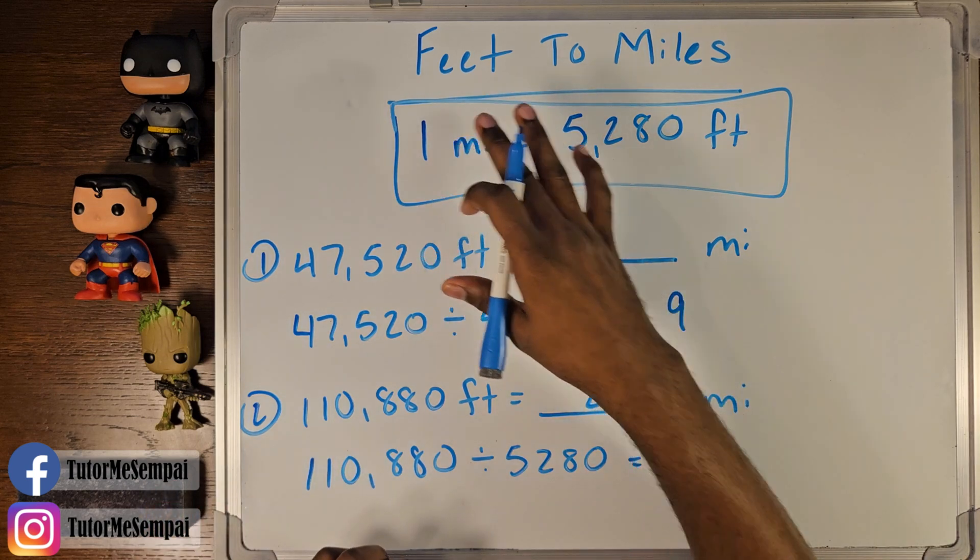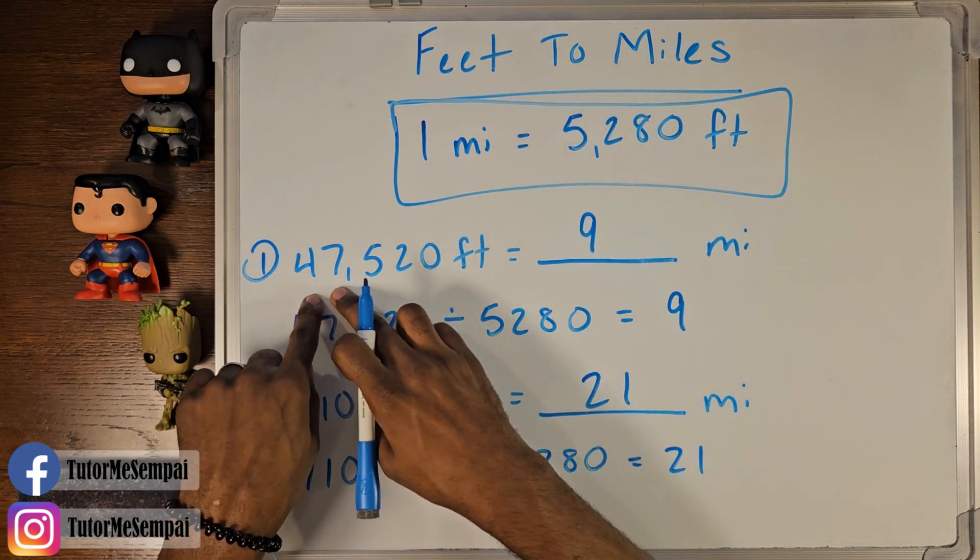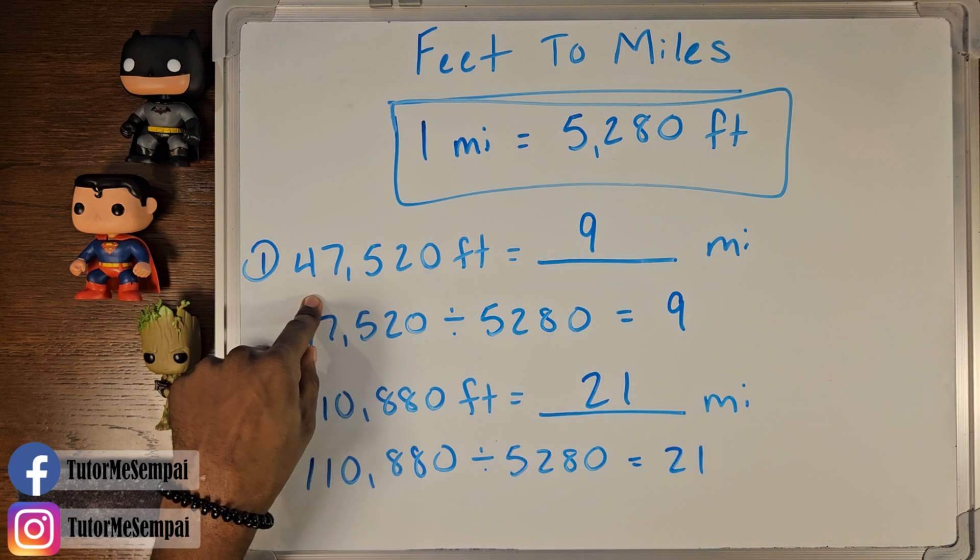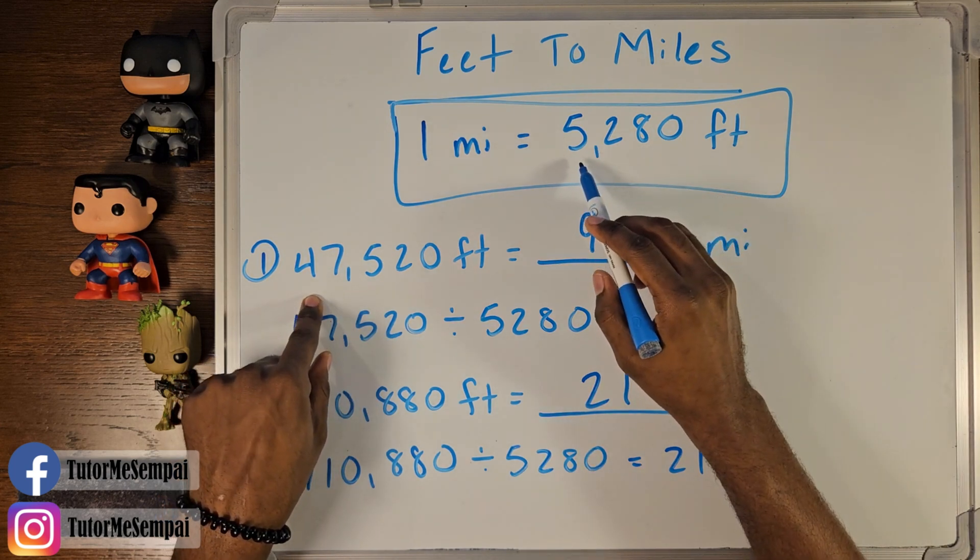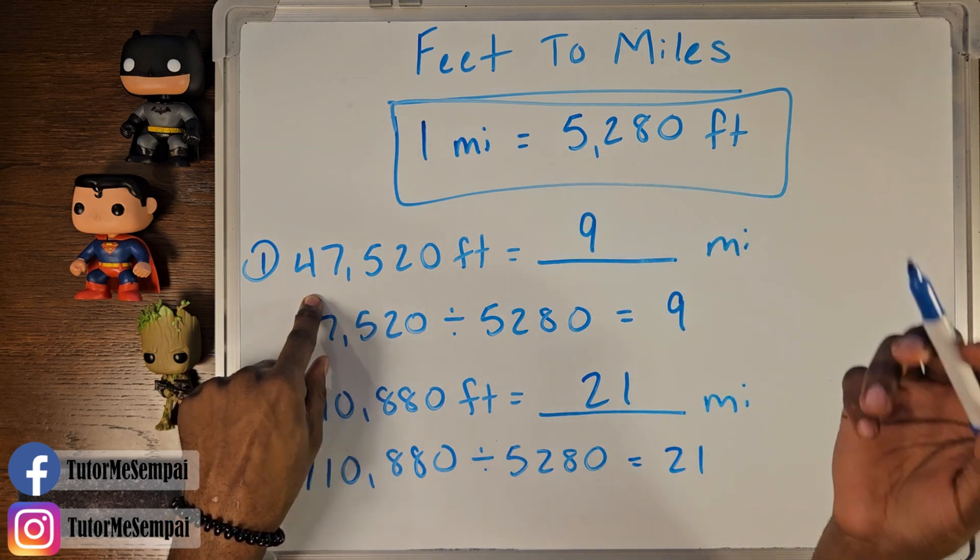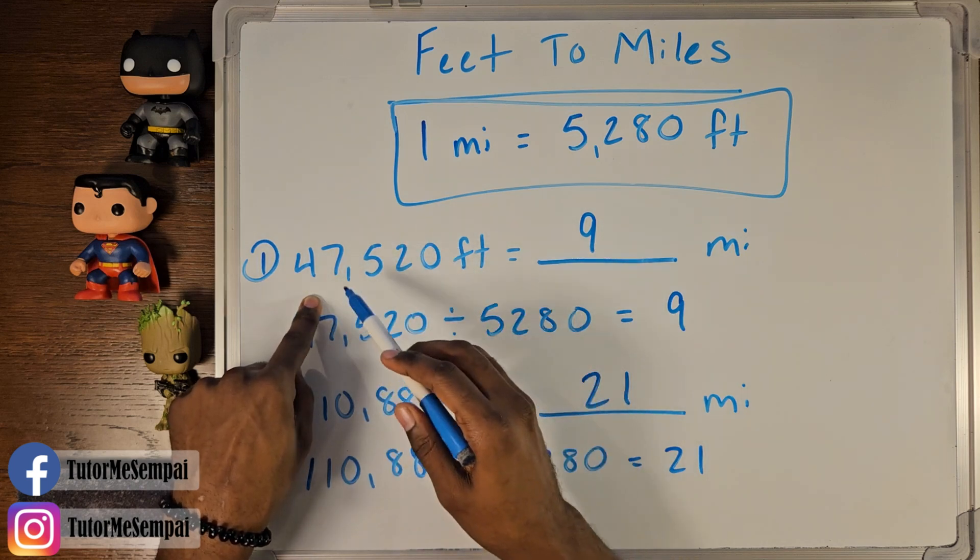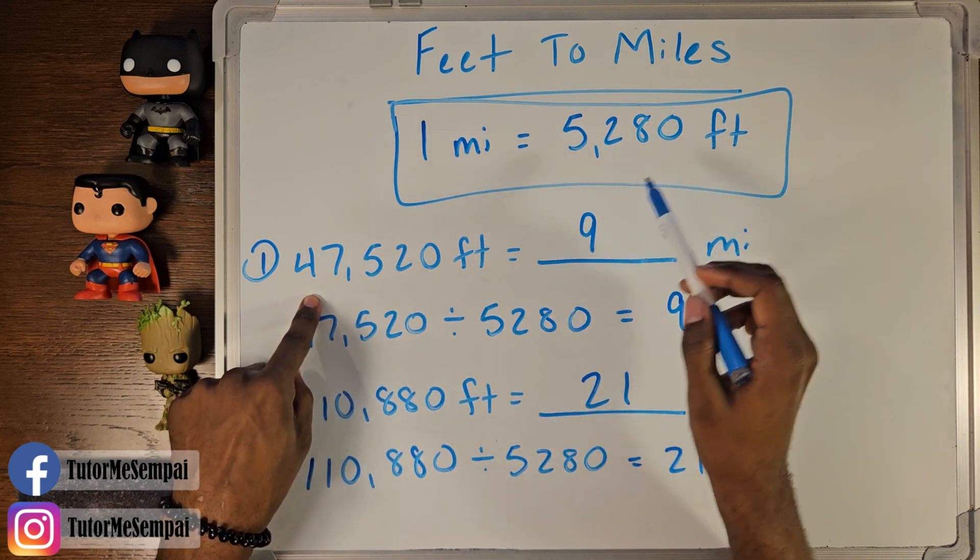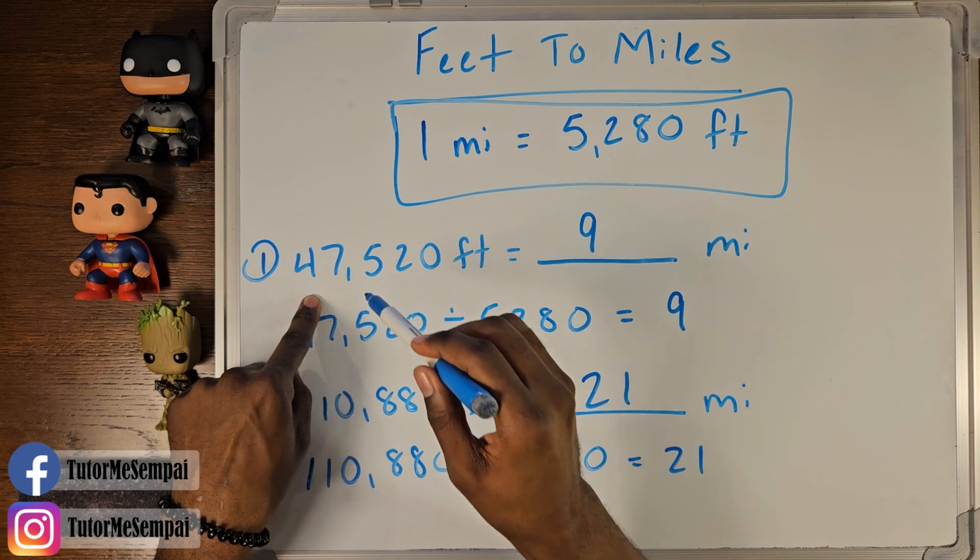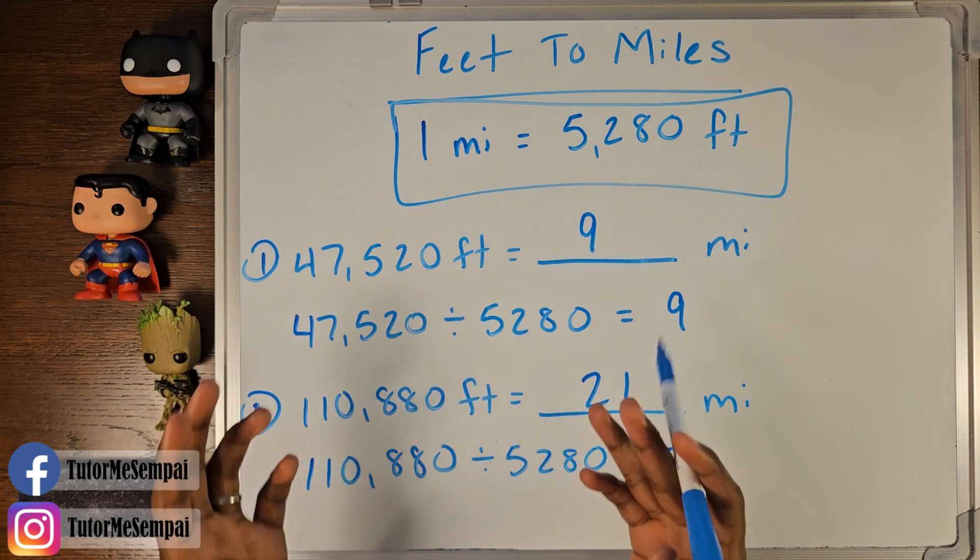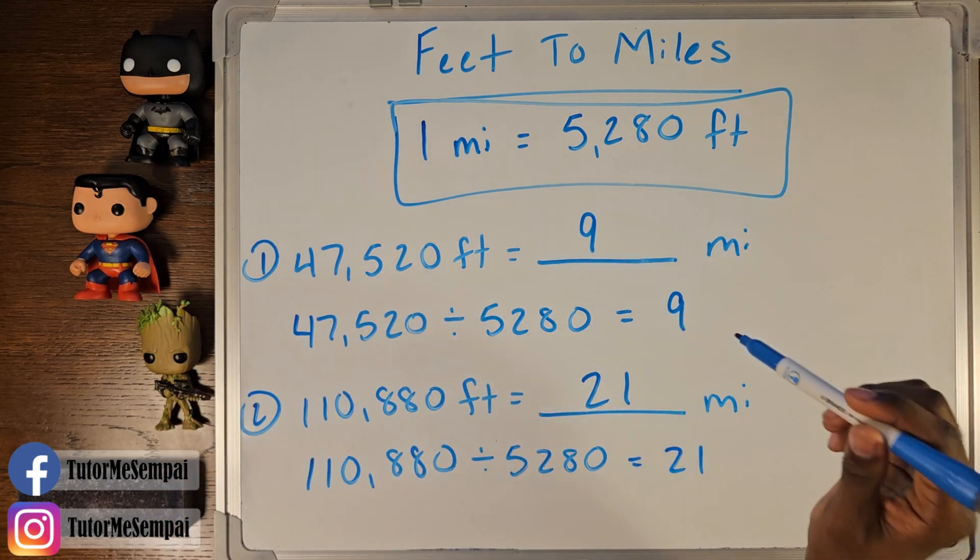When you're converting your feet to miles, you're going to take your total number of feet you have divided by your 5,280. Remember, you're trying to figure out how many groups of this amount of feet can you get out of your total amount of feet here. That will tell you how many miles you're going to have.